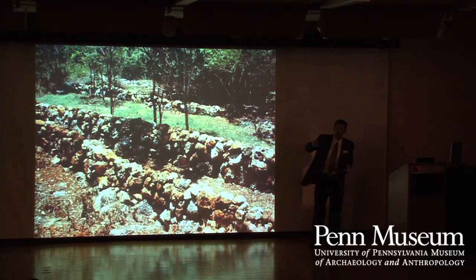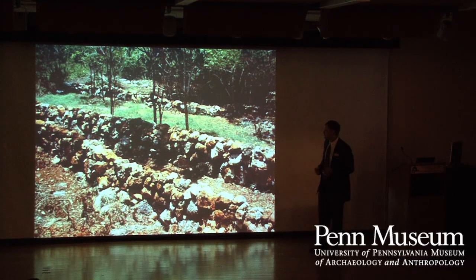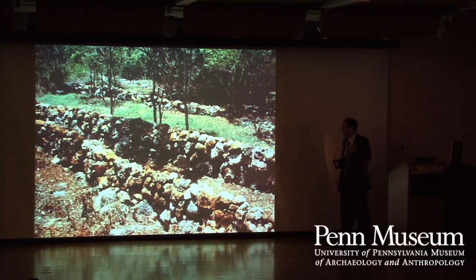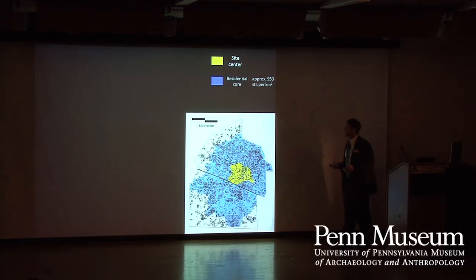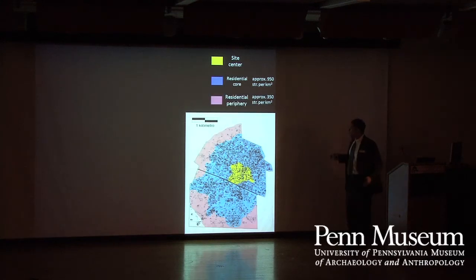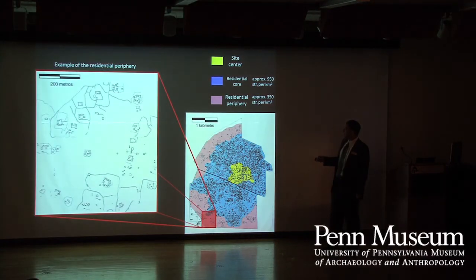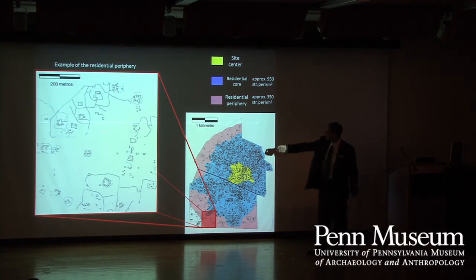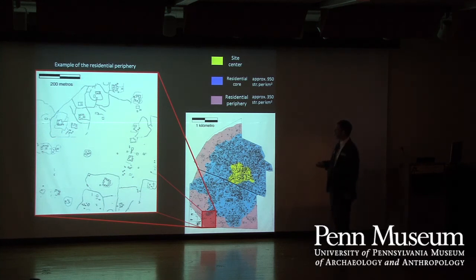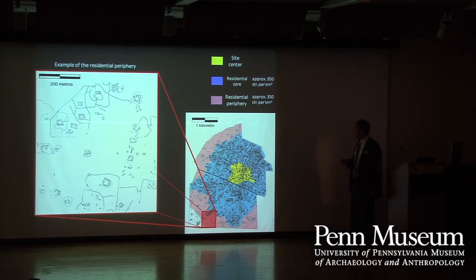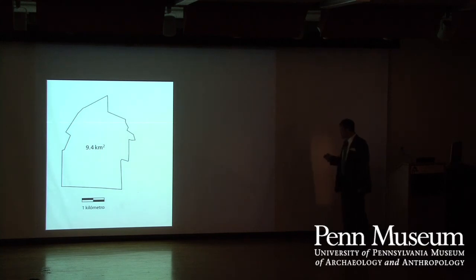This was great data that we had to get by walking over every single spot. Beyond the residential core, we had what we call the residential periphery — about 350 structures per square kilometer. By now you can find some open spaces between house lots. They're still using these stone walls, though, interestingly.